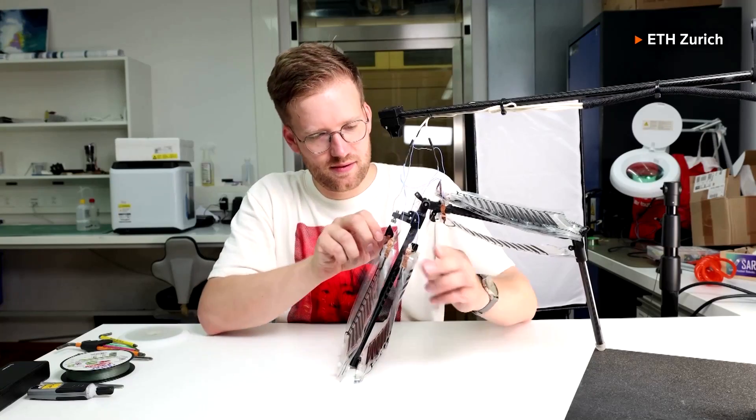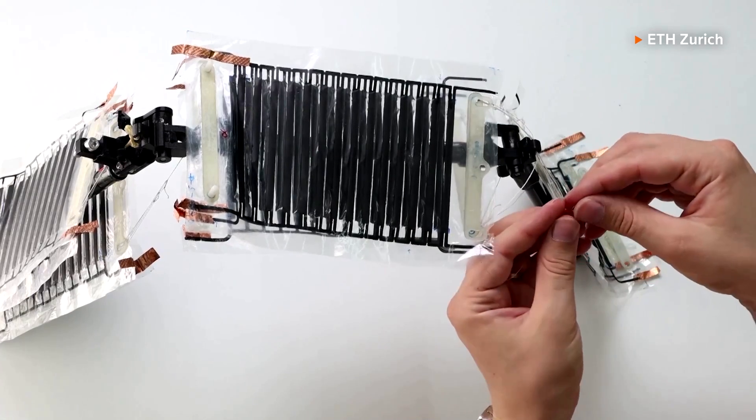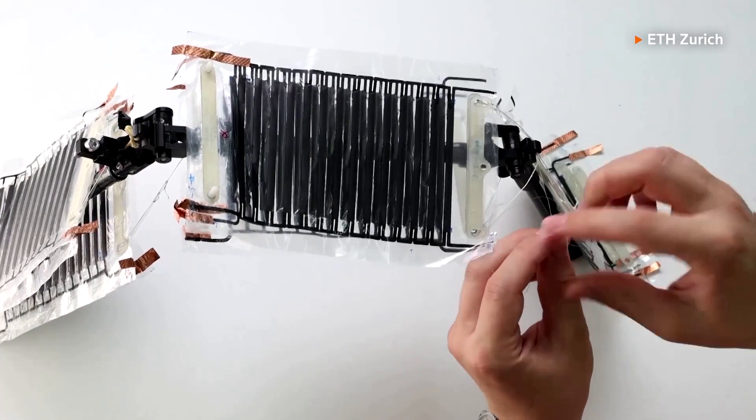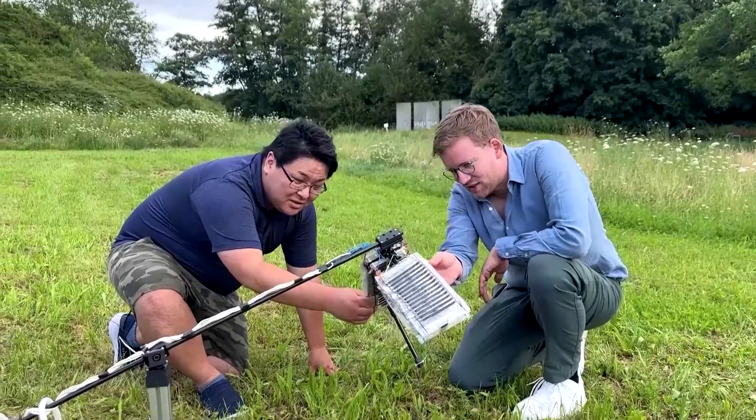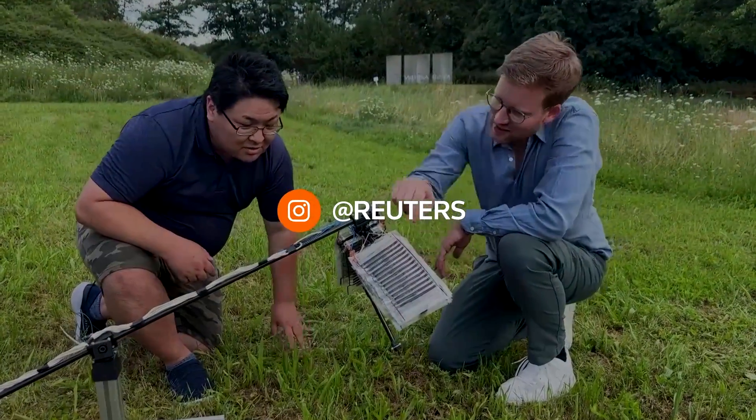Buschner imagines a future where battery-powered robots equipped with artificial muscles could be deployed for tasks like rescue operations. The team is now focusing on developing artificial muscle systems to incorporate tendons and joints.